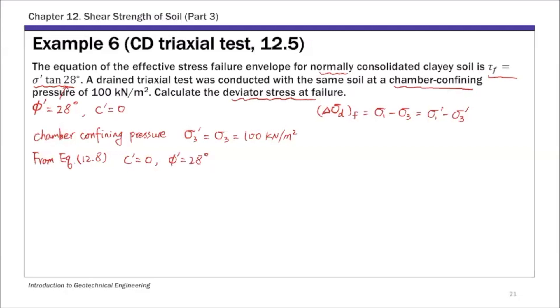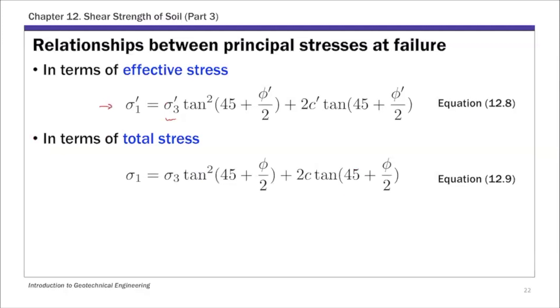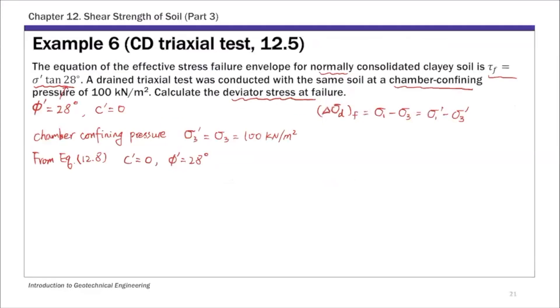If you look at this expression, so C' = 0 meaning basically this term is zero. So our σ1' is σ3' tan²(45 + φ'/2).